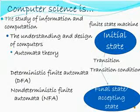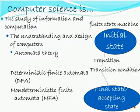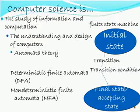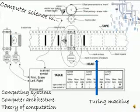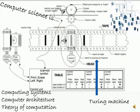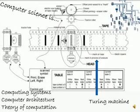Computer science is the study of information and computation, and it covers the understanding and design of computers, automata theory, the study of computers and the problems they are able to solve, computing systems, devices for implementing computations, and computer architecture.